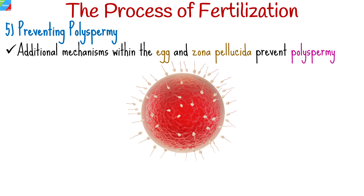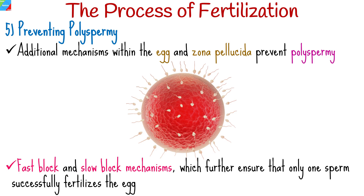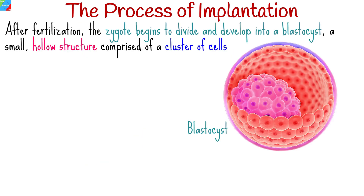Beyond the cortical reaction, additional mechanisms within the egg and zona pellucida prevent polyspermy. These include fast block and slow block mechanisms, which further ensure that only one sperm successfully fertilizes the egg.